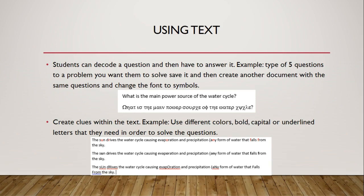Here are a couple of ways you can actually set it up. You can use text — have students decode a question and then answer it. For example, come up with a list of questions, let's say 10, on a document. Once you have those questions, copy and paste them onto another sheet and change the font to symbols. Make sure you give students a copy of the symbols sheet so they can decode what the actual letters stand for.